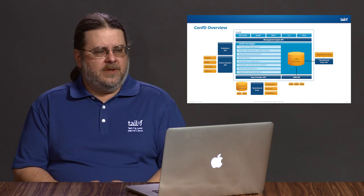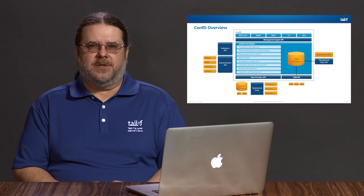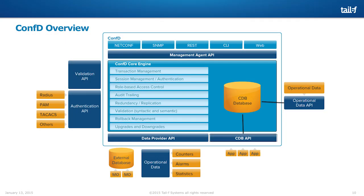Moving on, let's dive more into the capabilities of the ConfD core engine. The core engine is really the heart of ConfD. If you look at traditional network management implementations, your protocol implementations and protocol agents are just the tip of the iceberg. Your protocol agents are typically maybe 20% of your implementation effort for your management plane. The back end behind those protocols is usually about 80% of that implementation — and that back end is what the core engine provides.